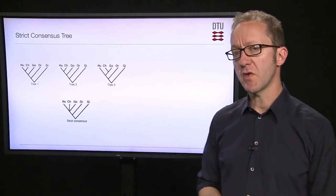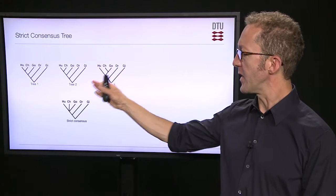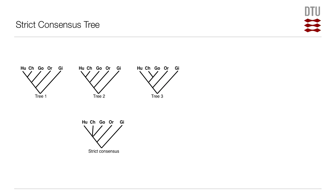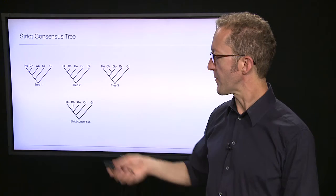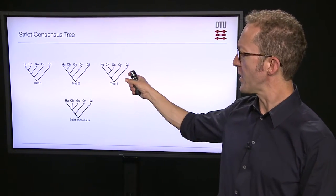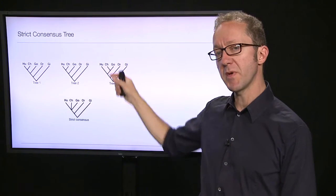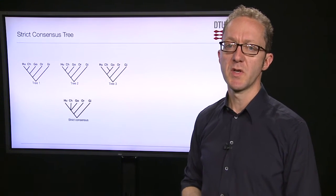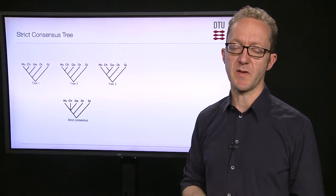Consensus trees can be constructed in different ways. One way, called the strict consensus, takes a set of input trees. On this slide I've shown three input trees. The first two are the same: human together with chimp, then more distantly gorilla, orangutan, and gibbon. The second tree is identical to the first. In the third input tree, chimp has moved over and is more closely related to gorilla than it is to human.